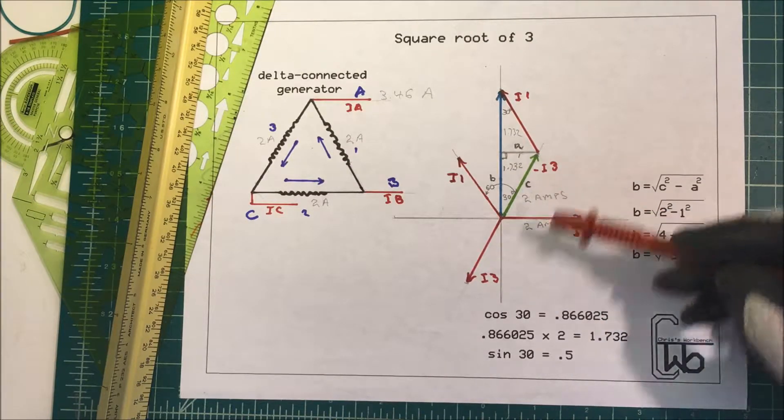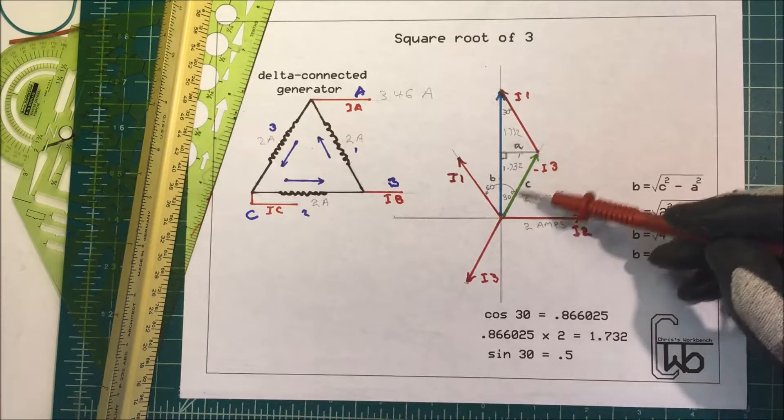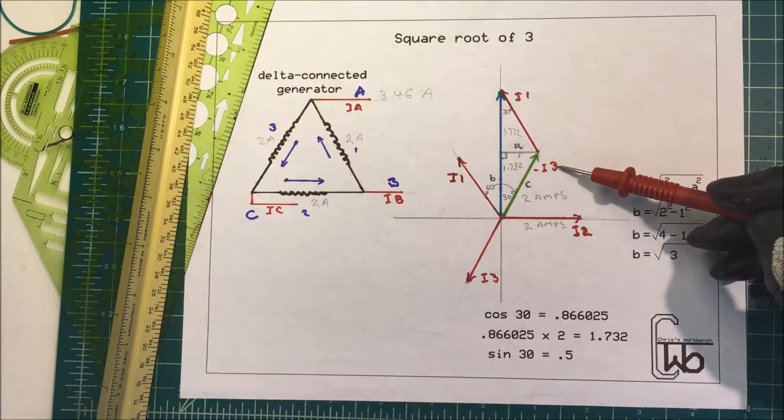So we can move this vector up to here, this green one here, and we'll call that minus three.